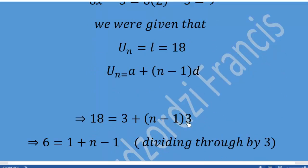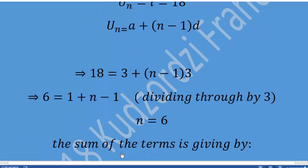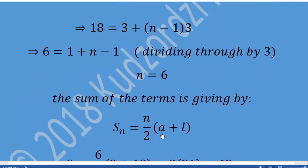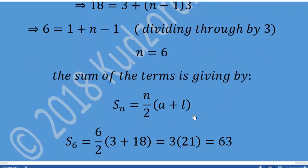From 18 = 3 + (n-1)×3, we divide through by 3 to obtain 6 = 1 + (n-1), which implies n = 6. The sum of the terms is given by S_n = n/2 × (a + l), where l is the last term. Substituting n=6, a=3, and last term 18, we get 6/2 × (3+18) = 3 × 21 = 63.